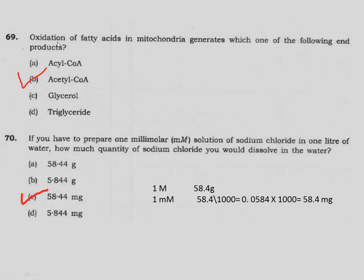Question 69: Oxidation of fatty acids in mitochondria generates which one of the following end products? Fatty acid oxidation in mitochondria proceeds in a stepwise manner to release acetyl CoA, which enters the citric acid cycle. Correct answer is option B.